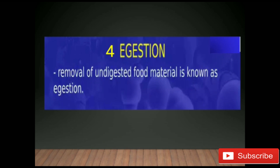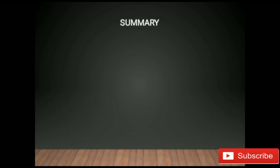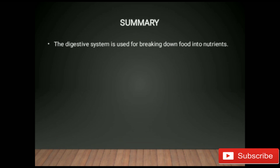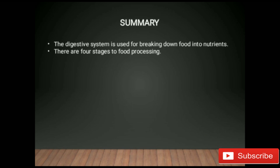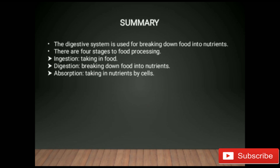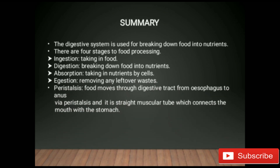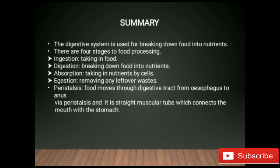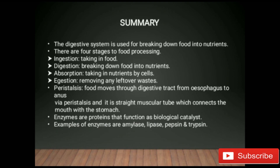To summarize today's lesson: the digestive system is used for breaking down food into nutrients. There are four stages of food processing — ingestion (taking in food), digestion (breaking down food into nutrients), absorption (taking in nutrients by cells), and egestion (removing leftover waste). You also learned about peristalsis — food moves through the digestive tract from esophagus to anus. Enzymes are proteins that function as biological catalysts; examples include amylase, pepsin, and trypsin.